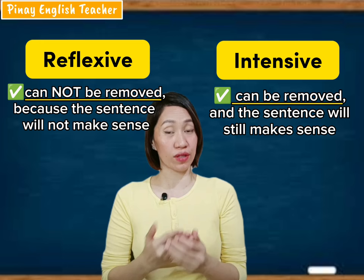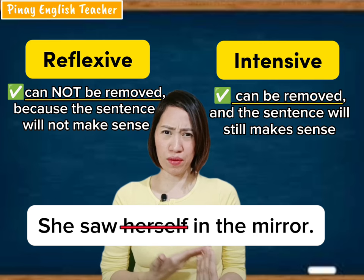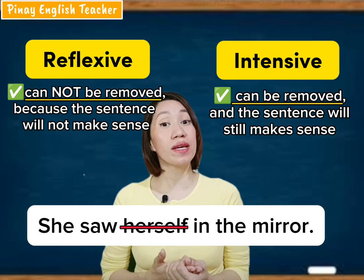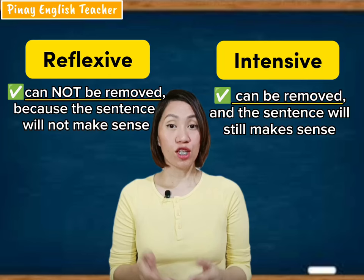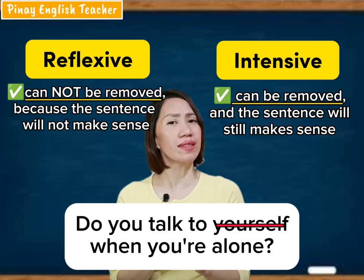A reflexive pronoun cannot be removed from the sentence because if we do, it will not make sense. For example, 'She saw herself in the mirror' — if we remove 'herself,' we get 'She saw in the mirror.' She saw who? The sentence no longer makes sense. Another example: 'Do you talk to yourself when you're alone?' — removing 'yourself' gives 'Do you talk to when you're alone?' The sentence is incomplete, so 'yourself' in that sentence is a reflexive pronoun.